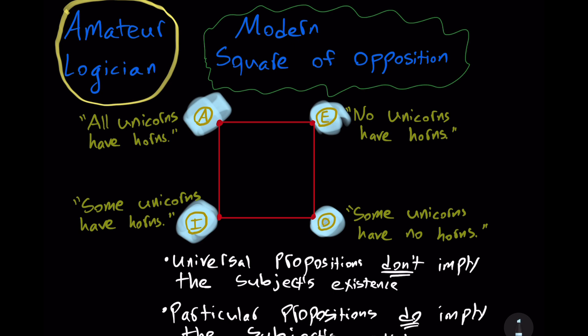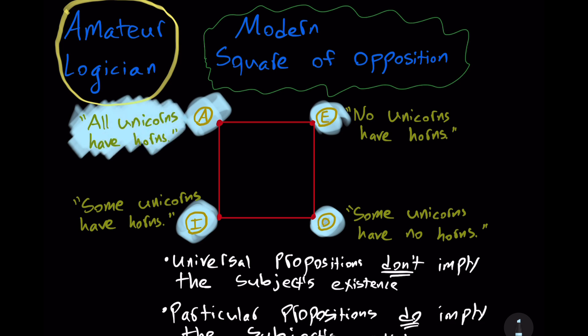For example, take the proposition 'all unicorns have horns.' Should we treat that proposition as true or false? On the one hand, we might think it's false because there are no unicorns in existence. But if we treat it as a conditional — a hypothetical that doesn't imply actual existence — it seems to be true: if unicorns exist, then those unicorns will have horns. So in fact, we're going to treat this proposition as true.